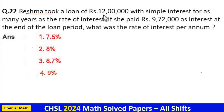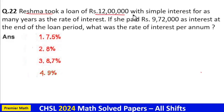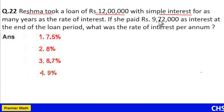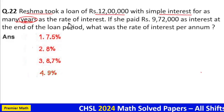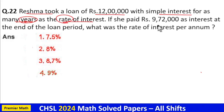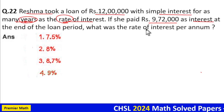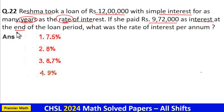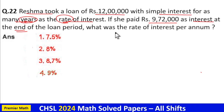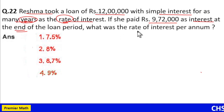Reshma took a loan of Rs 12,00,000 with simple interest for as many years as the rate of interest. She paid Rs 9,72,000 as interest at the end of the loan period. What was the rate of interest per annum?